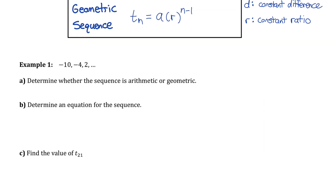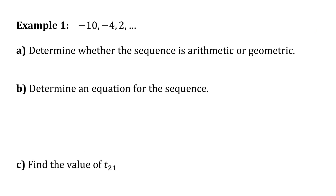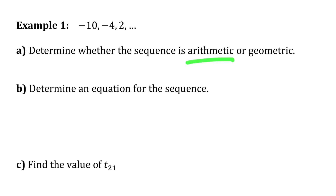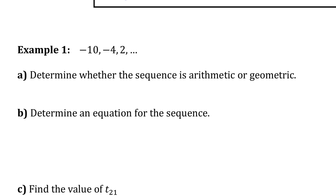Starting with example 1, it gives us the first three terms of a sequence and asks us to determine whether the sequence is arithmetic or geometric. If I find the ratio between the first pair of values by dividing the second term by the first, I get 2 fifths. But then the ratio between the next pair — 2 divided by negative 4 — gives negative 1 half. These ratios are different, so this is not a geometric sequence.